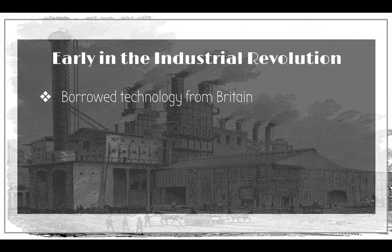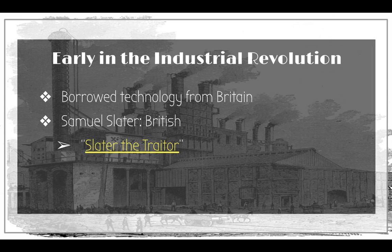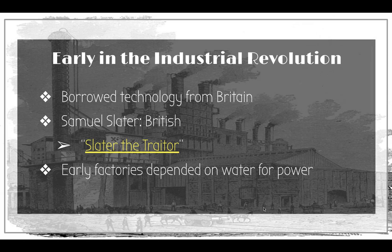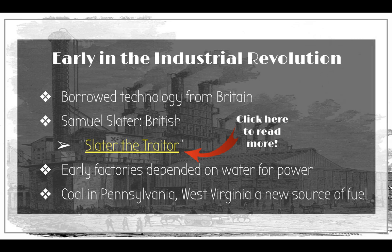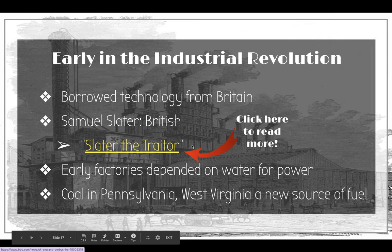Early in the Industrial Revolution, many ideas came from Britain. One of those people was Samuel Slater. Because he was British and brought his ideas to America and prospered here, people called him 'Slater the Traitor.' We'll talk more about him later. Also, a lot of factories depended on water for power, or coal, which later became a new source of fuel. If you see anything highlighted in yellow in the lecture, you can click on it and it will take you to a document to read more about that topic.